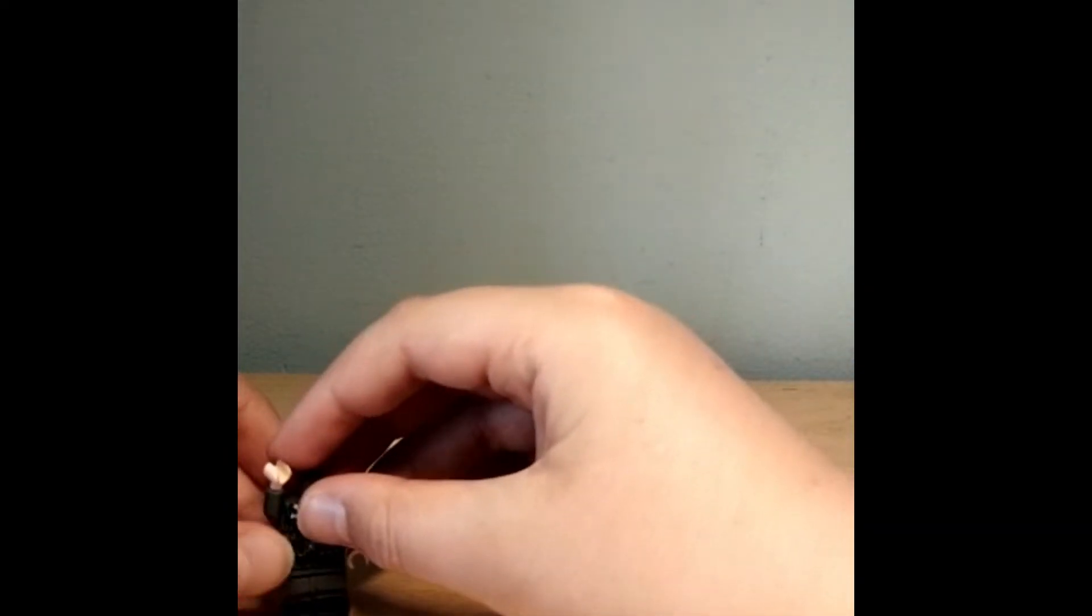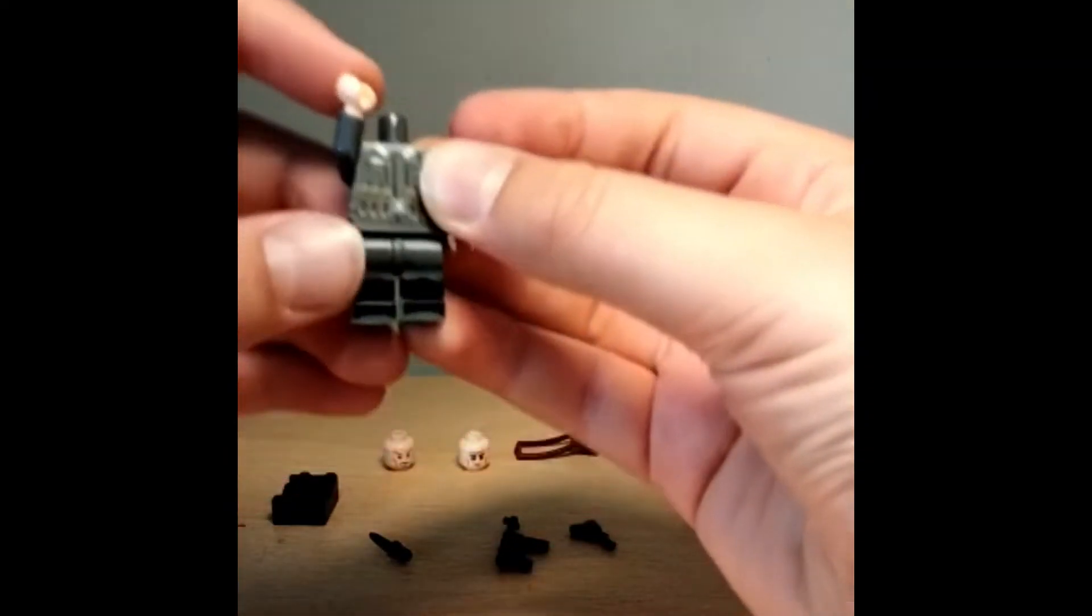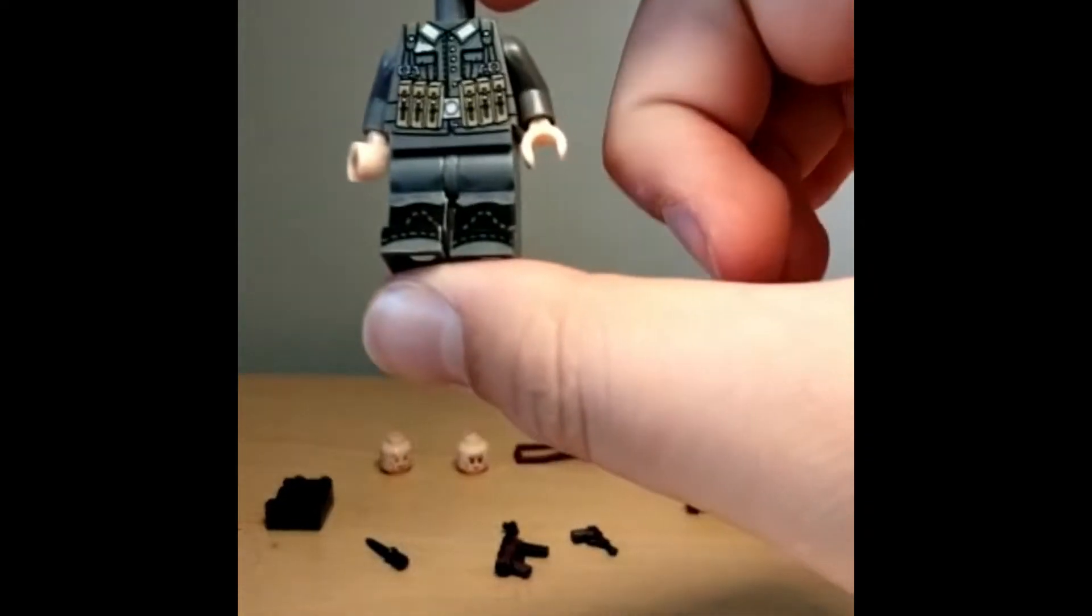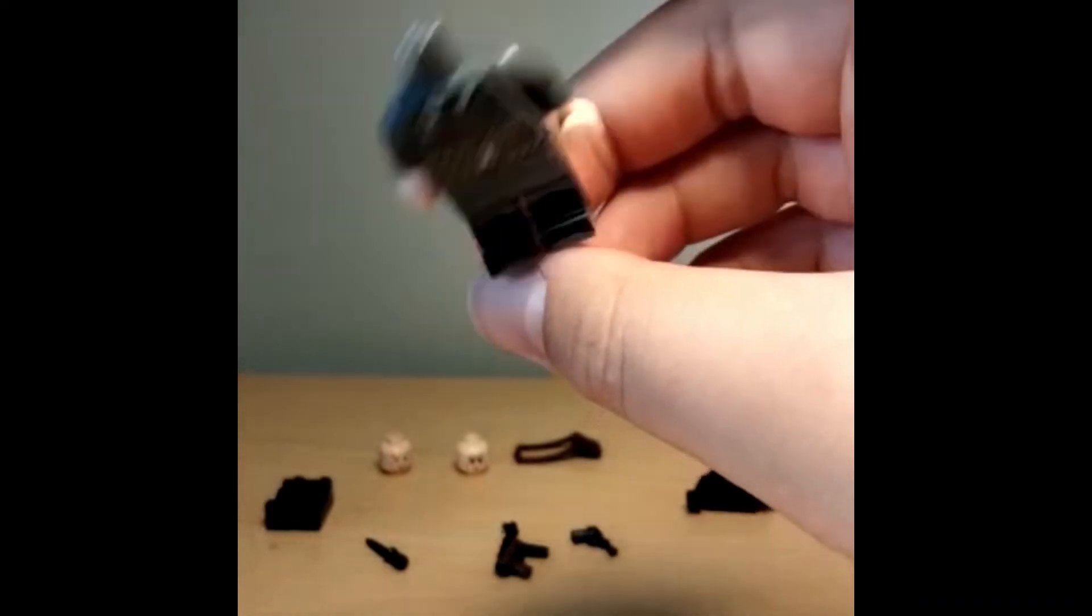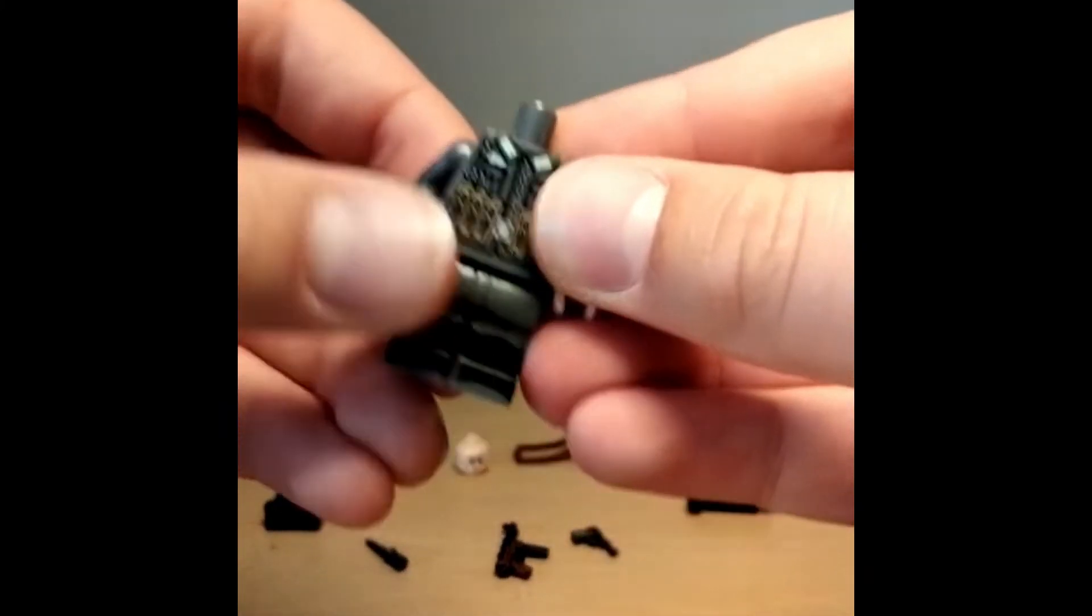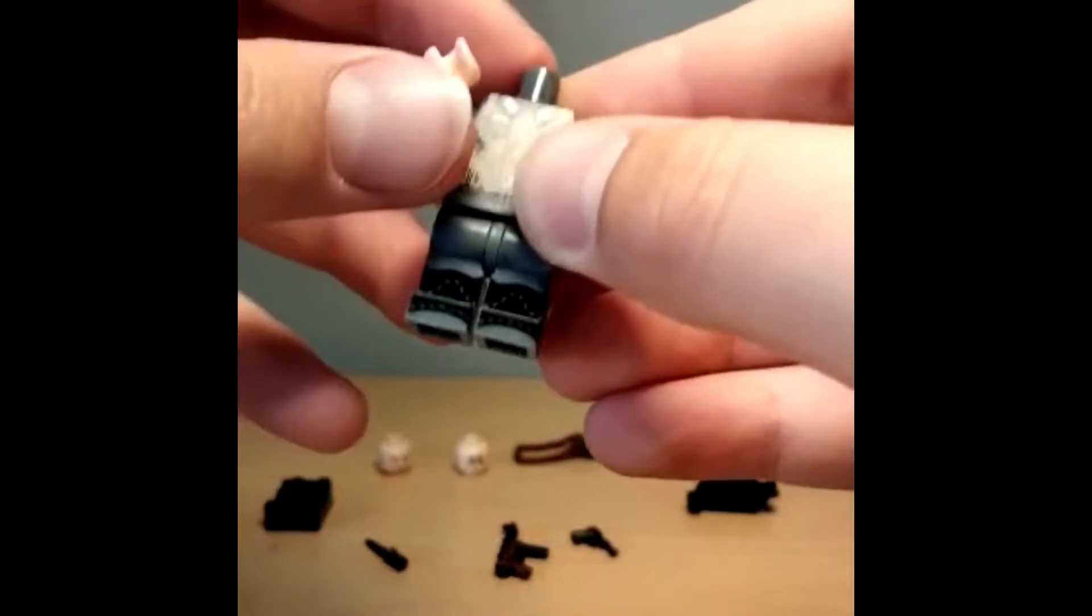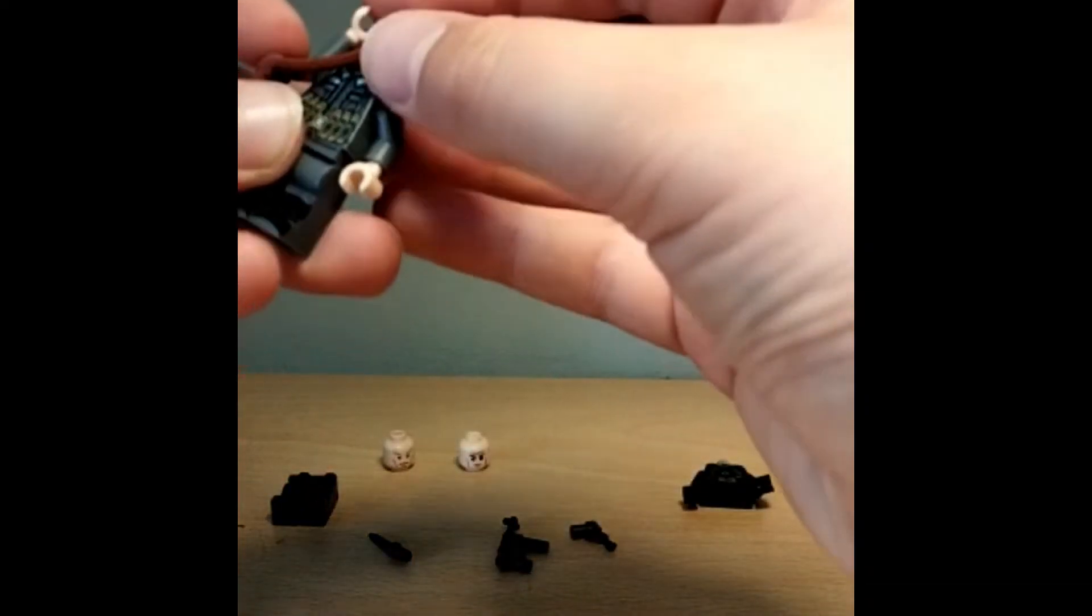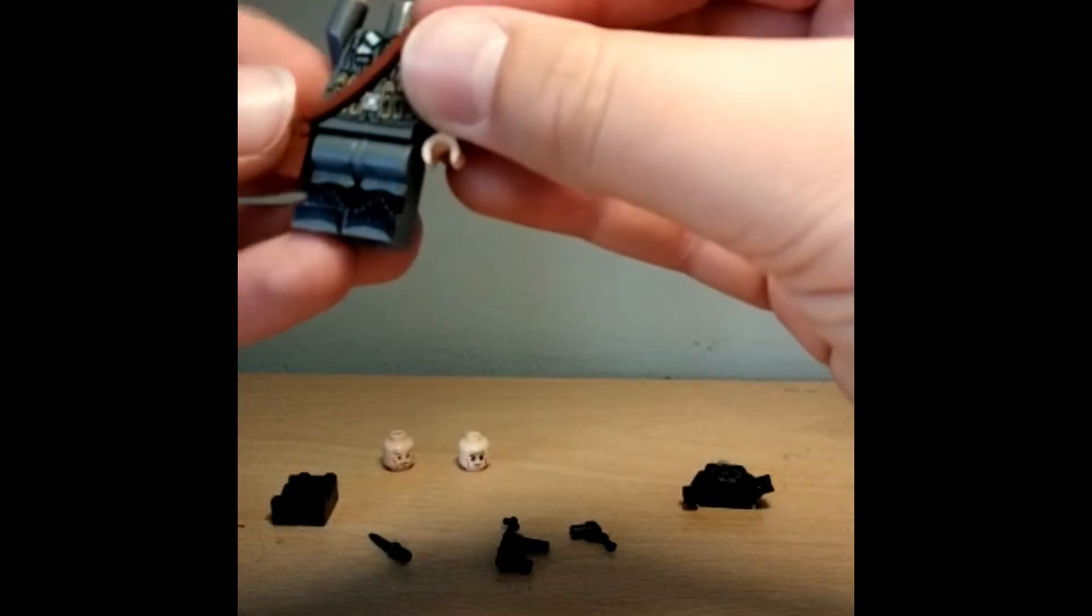So I'm going to start off with just a standard LEGO German soldier. You're going to want two grey minifigure torso and legs. Then if you put the arm up and then put the shoulder bag on.